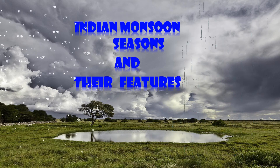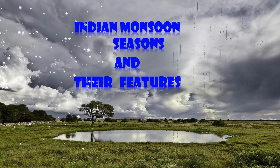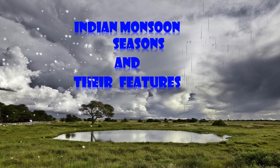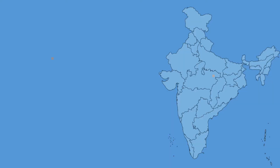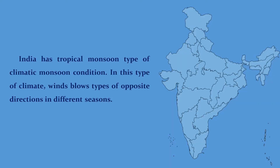Indian Monsoon Seasons and Their Features. India depicts all the typical features of tropical monsoons. During the first half of the year, the winds blow from south-west to north-east, and in the remaining half, they blow from north-east to south-west.